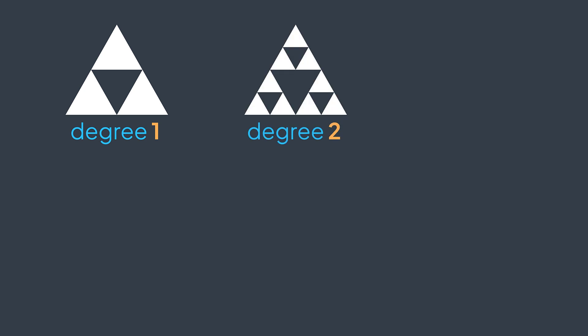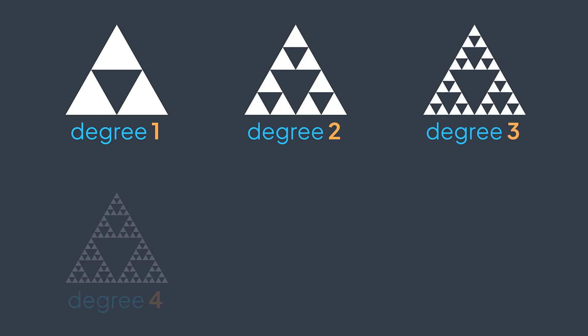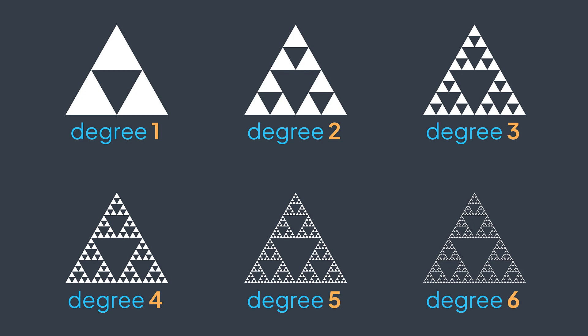For example, here is a triangle of degree 1, of degree 2, of degree 3, of degree 4, of degree 5, of degree 6, and so on.